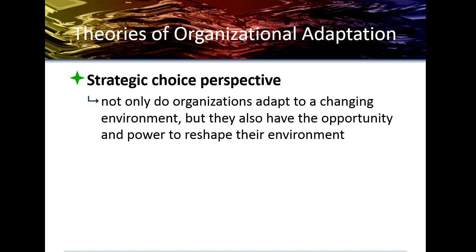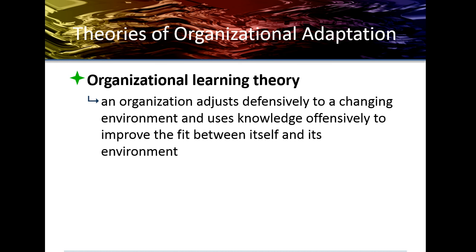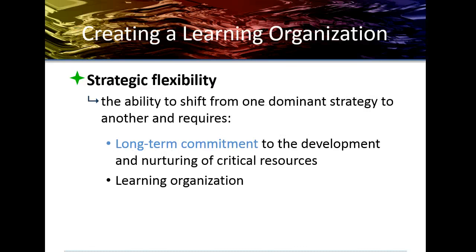Companies have to have a strategic choice. Their perception is going to be not only about how they adapt to changing environments and innovation, but also about the opportunity and power to read and shape their environment in total. The organizational learning theory looks at how learning organizations are skilled at four main activities: solving problems systematically, experimenting with new approaches, learning from their own experiences and past history as well as from experiences of others and competitors, and transferring knowledge quickly and efficiently throughout the organization.